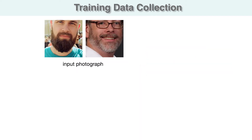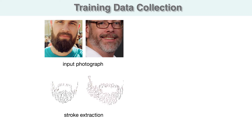We train these networks using a set of guide strokes automatically extracted from facial hair images. These strokes are created by estimating a vector field defining the dominant local orientation of the depicted hairstyle, and integrating this field at various points to create sparse individual strokes with the appropriate shape and color to describe the overall structure and appearance of the depicted hairstyle.